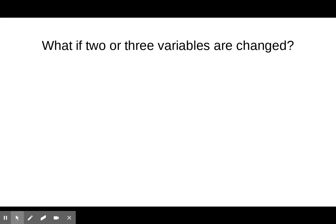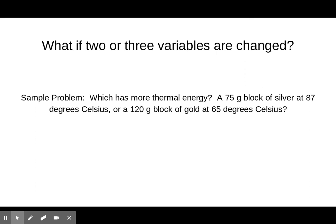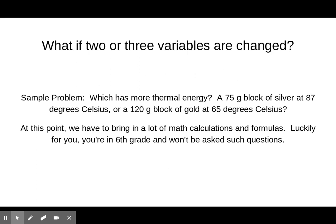All of your problems are going to have only one thing being different, but students always ask: what if two or three things are changed? In real life, that's what does happen. If all three variables are different — like different masses, different temperatures, and different substances such as silver and gold — you'd have to do very complicated calculations using complex formulas. Luckily, you are in sixth grade and you are not going to be asked those kinds of questions.